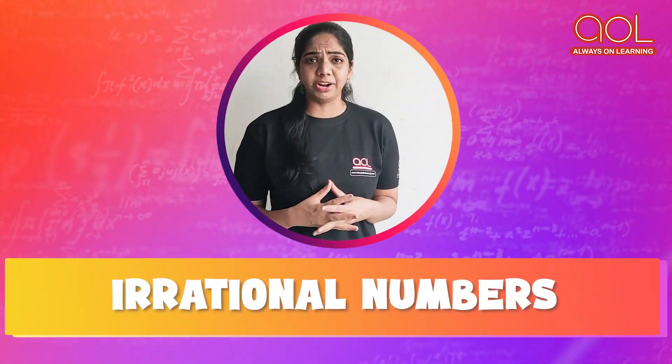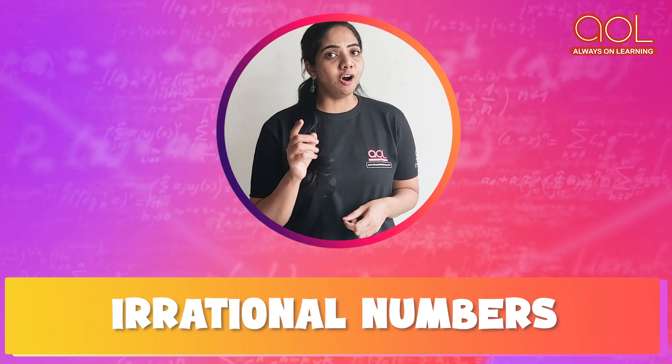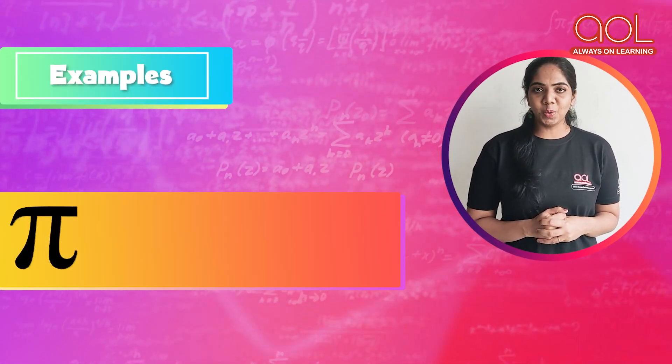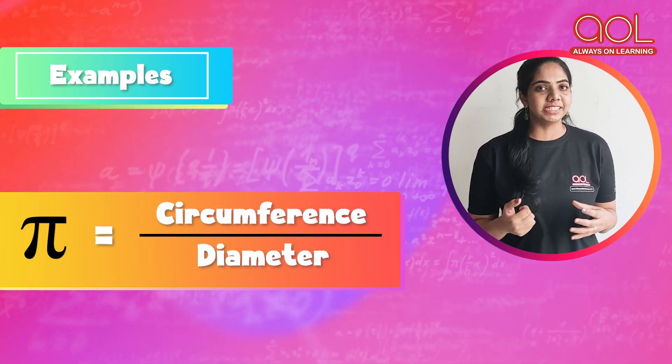So, then what is an irrational number? Are they very rare? Let us take the example of pi. You know what pi is? Yes, it is circumference by diameter of a circle.